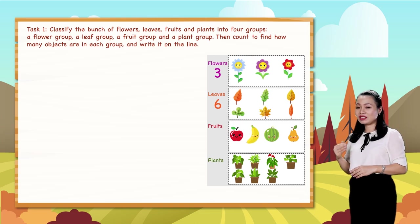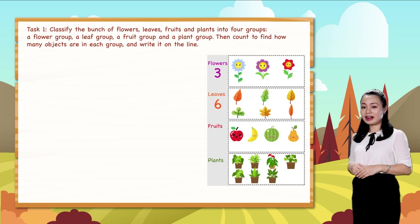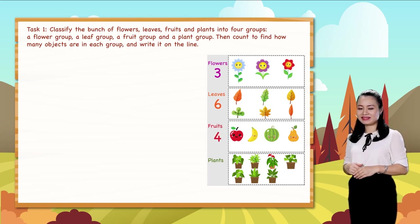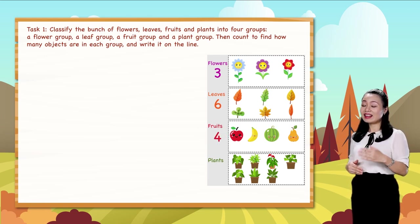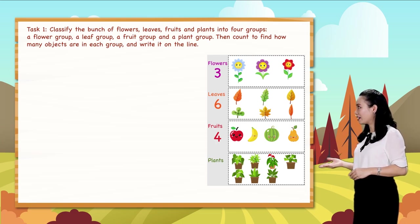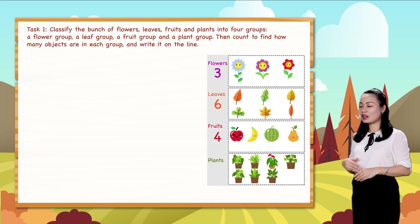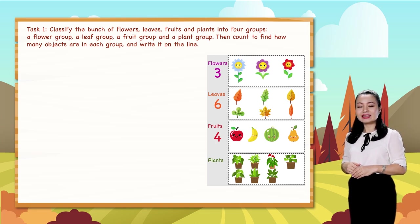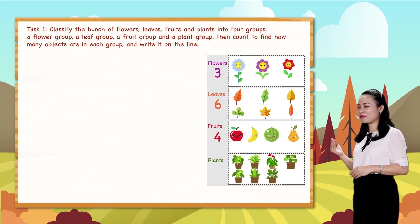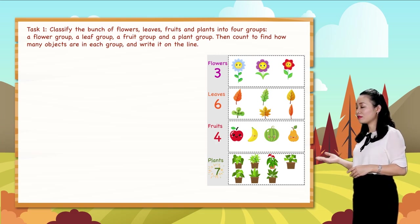One, two, three, four — so there are four fruits. The last one: one, two, three, four, five, six, seven — so there are seven plants.